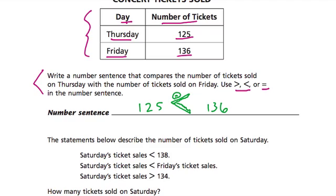We can write this in other ways, though. For example, if you've written 136 first, the symbol would face this way. It's all about the opening of the symbol that tells you which number is larger. So these are both correct.